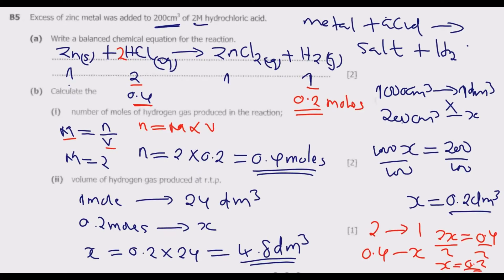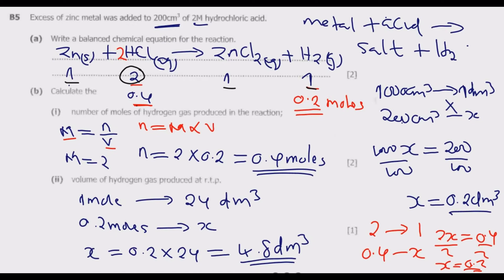Question C: What mass of zinc was used in the reaction? From the mole ratio, 2 moles of HCl reacts with 1 mole of Zn. We used 0.4 moles of HCl, so we need 0.2 moles of zinc — half of 0.4 — the same ratio as with hydrogen gas.